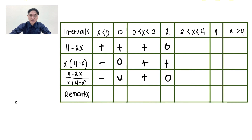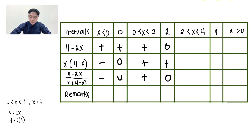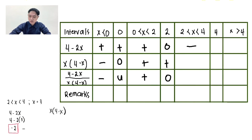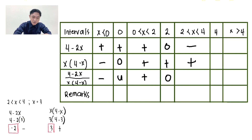For 2 less than x less than 4, let's try positive 3. Evaluate 4 minus 2x: 4 minus 2 times 3. The answer is negative 2, sign is negative. For x times the quantity of 4 minus x: 3 times 4 minus 3. The answer is positive 3, sign is positive. Negative divided by positive is negative.